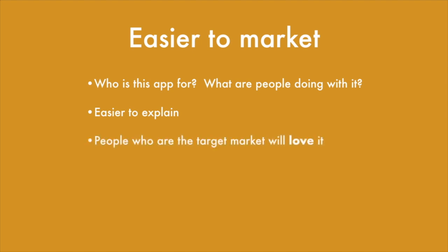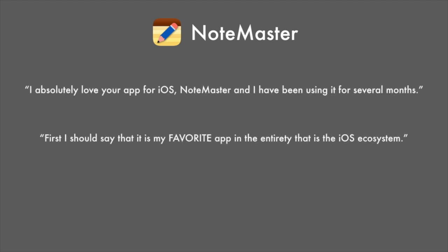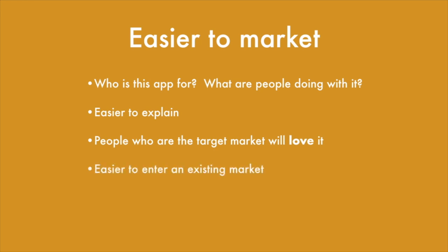The people who are the target market — the people whose vision matches your own — they will love your app and they will be champions for your app. And that makes it a little easier to market. I do get emails and people do love Notemaster; they say nice things about it. And finally, it's kind of easier to enter an existing market if your app is opinionated. Think about the Clear app — it came out several years after the App Store launched and there were hundreds, if not thousands of to-do list apps. But they got a lot of attention and sales because they had this really bold, strong, opinionated way of doing to-do lists.